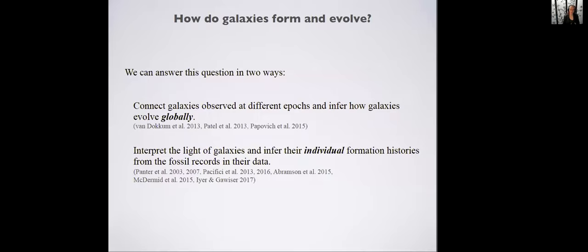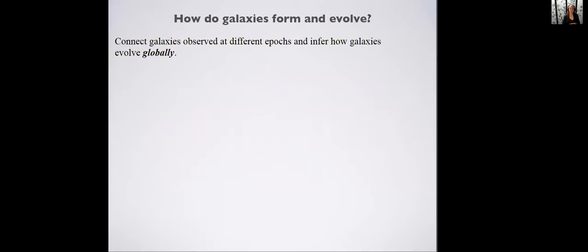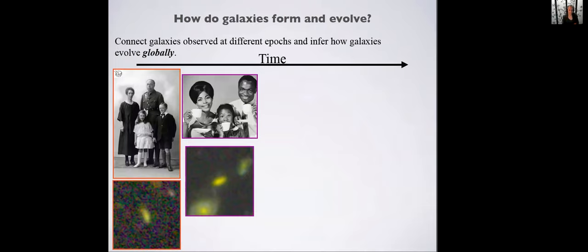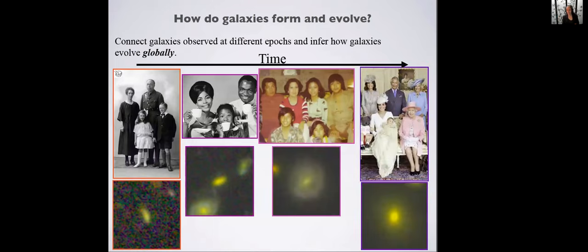We can answer questions about galaxy evolution in two ways: we can connect galaxies observed at different epochs and infer how they evolve in a global, statistical way, or we can interpret the light of galaxies and infer their individual formation histories from the fossil records in their data. As an analogy, we can look at pictures of galaxies like we look at pictures of people — a family in the 1920s, 1950s, 70s, and 2000s.